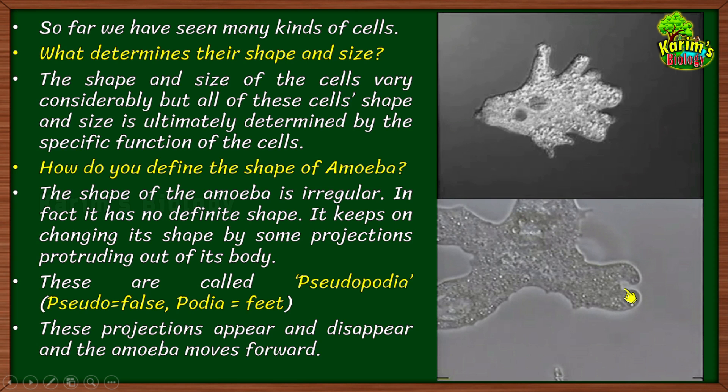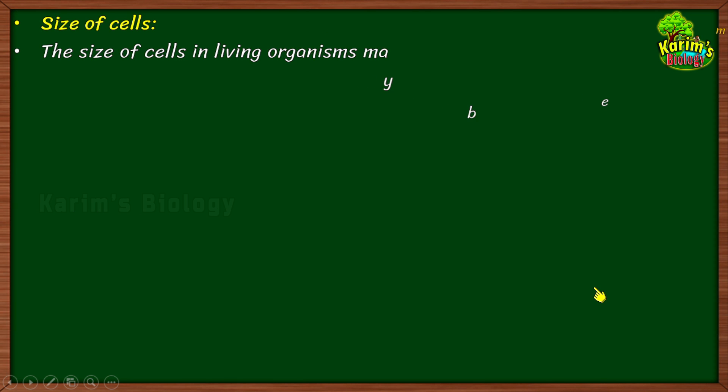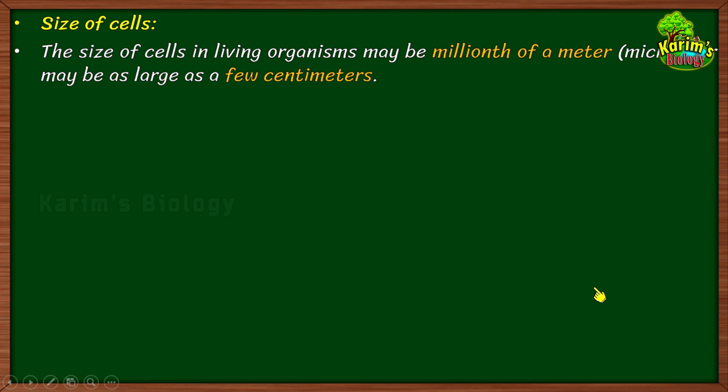Now come to the size of the cell. The size of cells in living organisms may be a millionth of a meter, which is called a micron, or may be as large as a few centimeters. We have some cells in our body which are very small and some which are long and visible to the naked eye, measuring a few millimeters or centimeters.